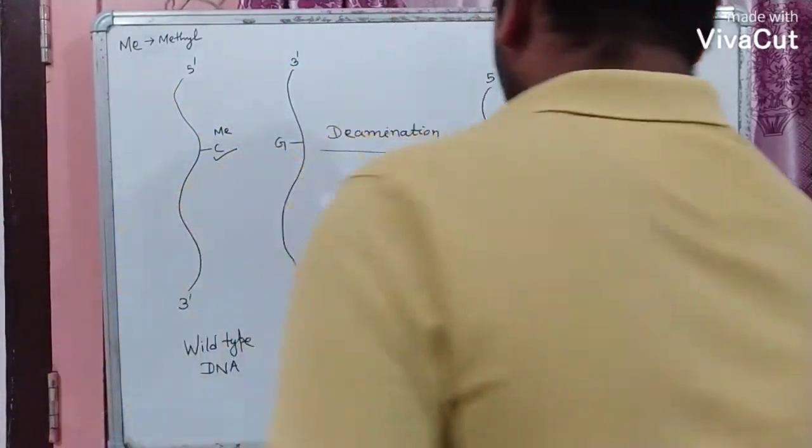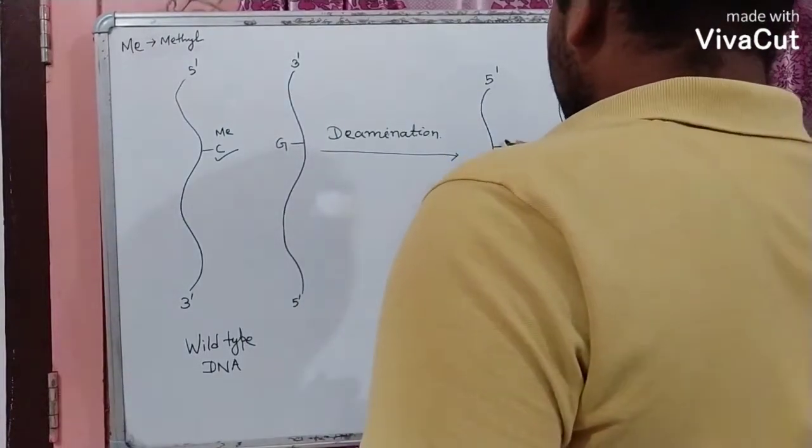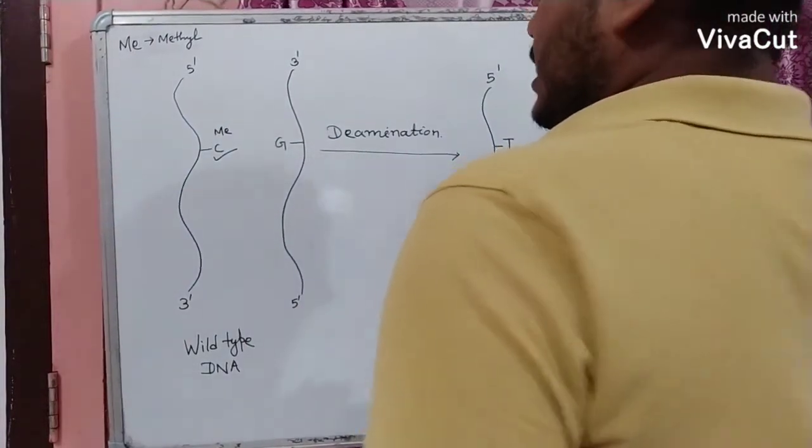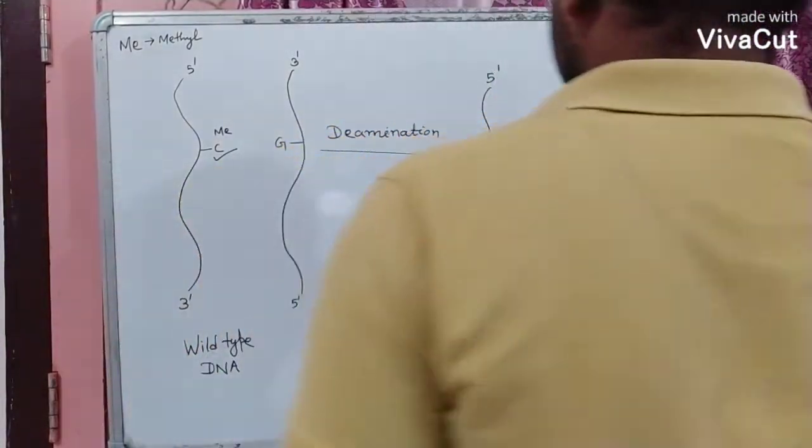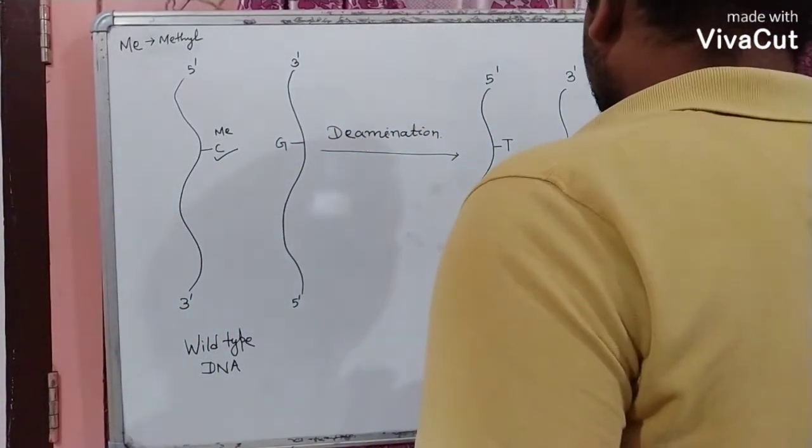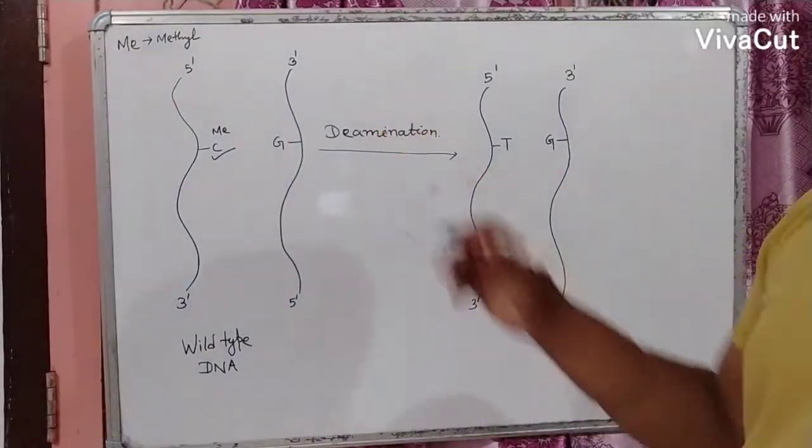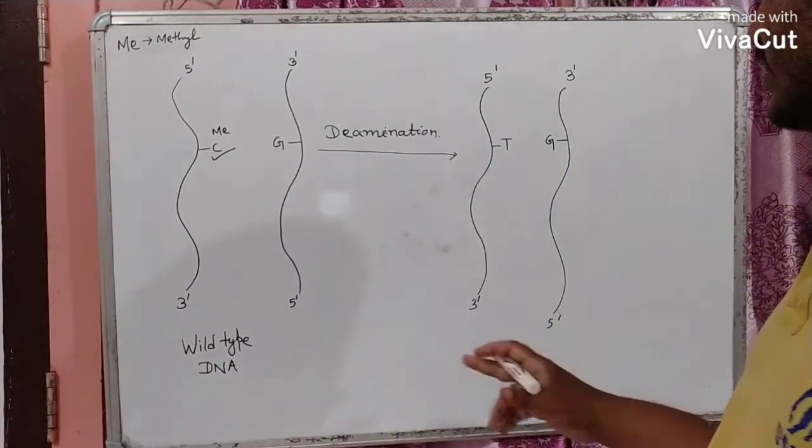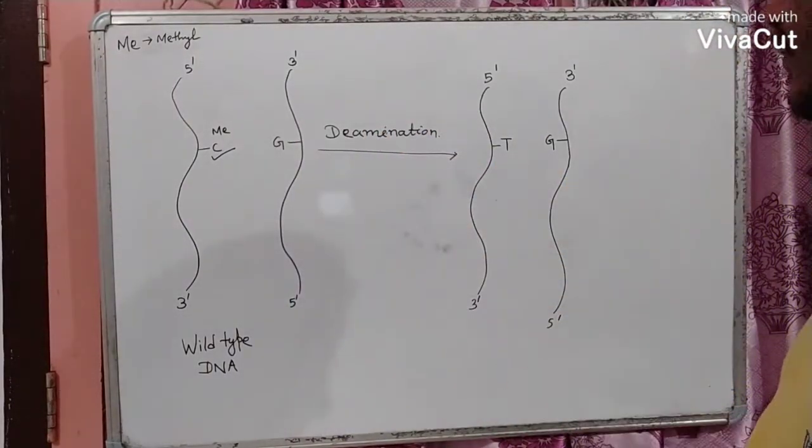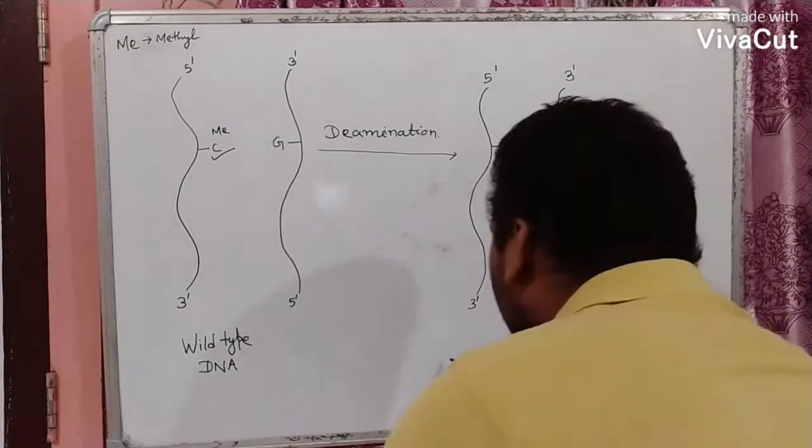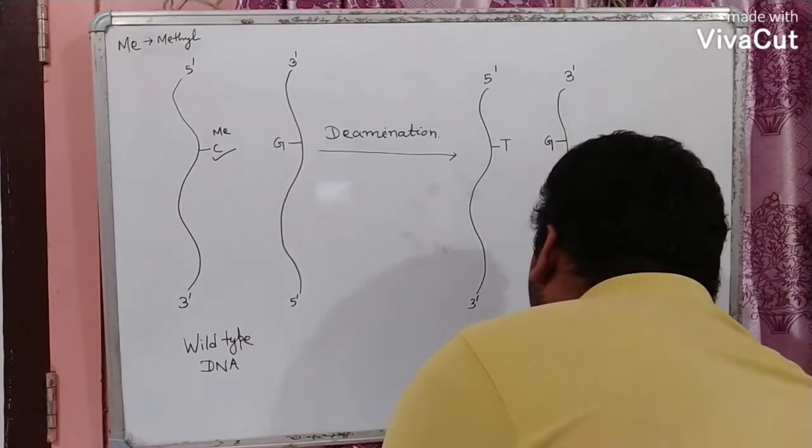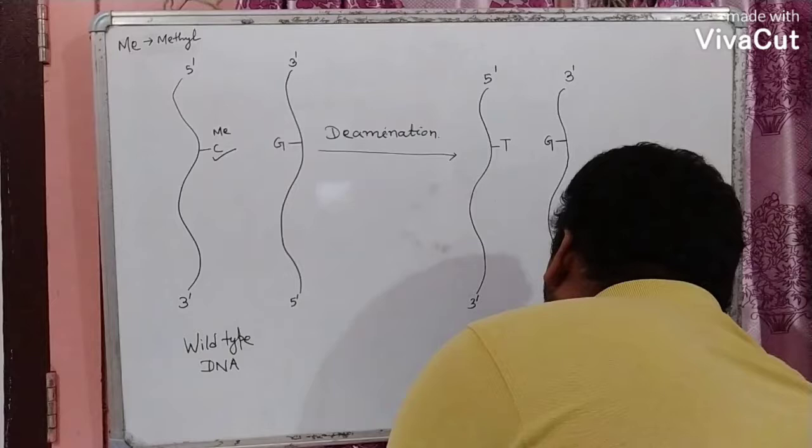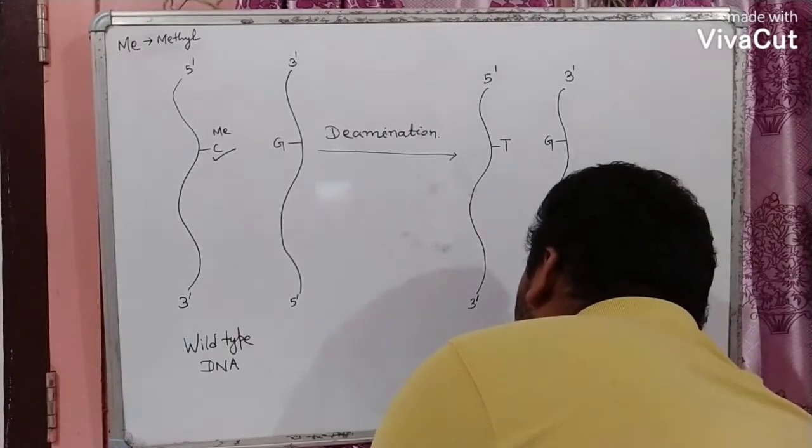And after this de-amination process, this methylated cytosine will produce here the thymine and the thymine generally base pairs with adenine. So, after the de-amination process, this is the newly formed mutated DNA.